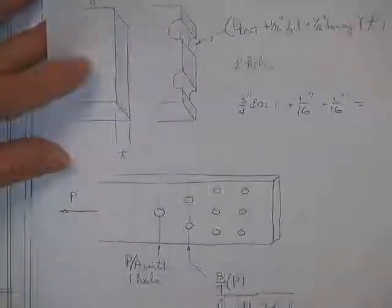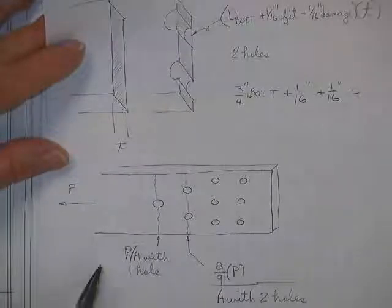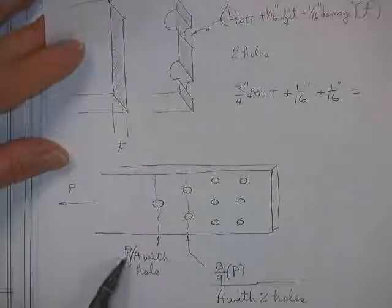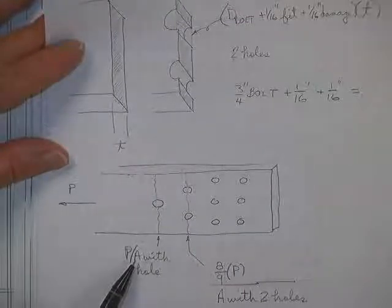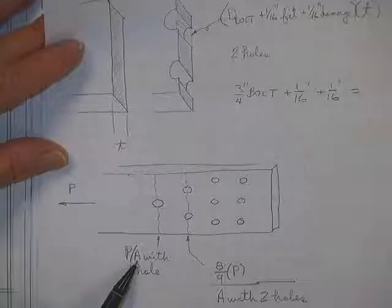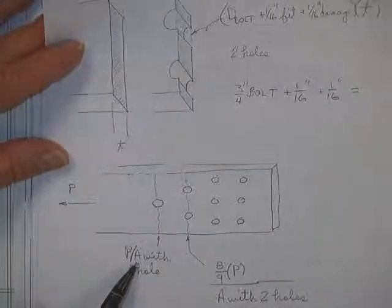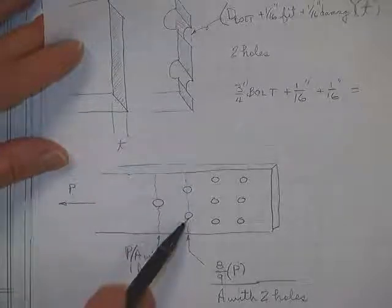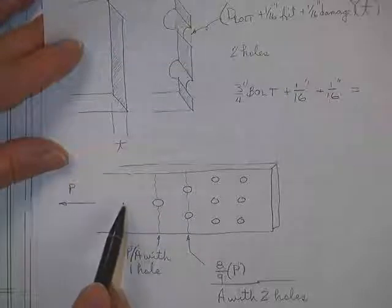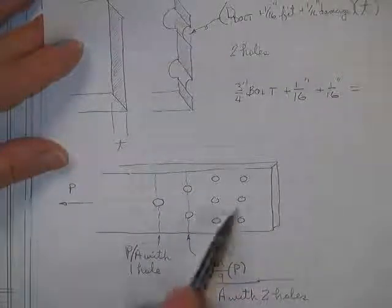Here's the load coming down a plate. The load here would run into one hole and cause stresses across here. The stress would be P over A. The area being what kind of area? A net. That's right. Whoever said effective is also right. They're both the same for plates bolted to plates.